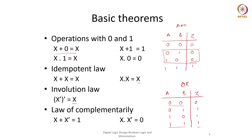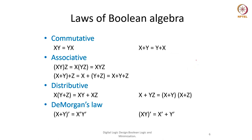These basic theorems will help us. Let us consider a few more: whether these operations are commutative, associative, and distributive. They are commutative — meaning order does not affect the result. If we do AND of X and Y, or Y and X, it does not matter. For an AND gate, whether the order of variables is A, B, C or C, A, B, or B, A, C — the order does not matter in either AND or OR gate. That is what the commutative law says.